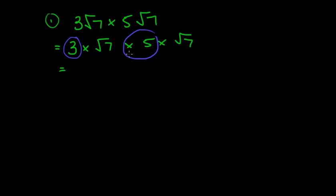For example, 3 times 5 makes 15. And root 7 times root 7. Well, that's the same as root 7 squared, which is just 7.